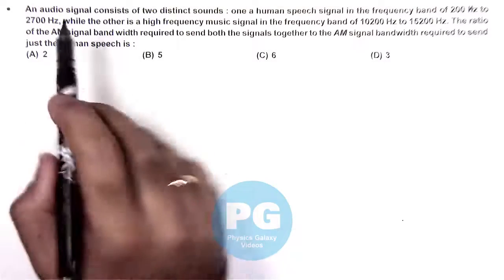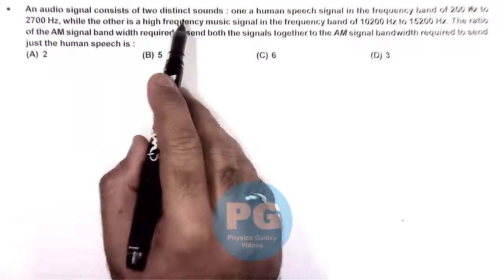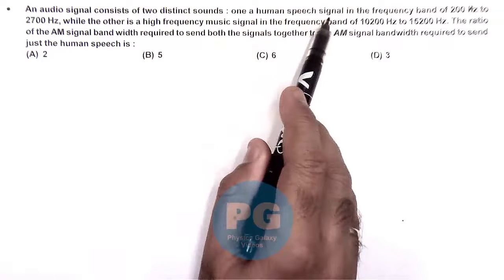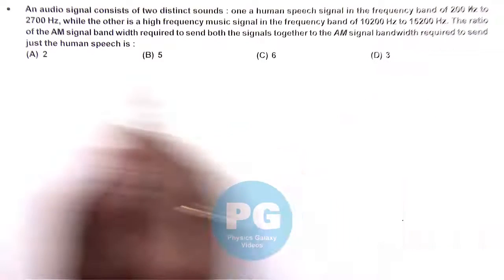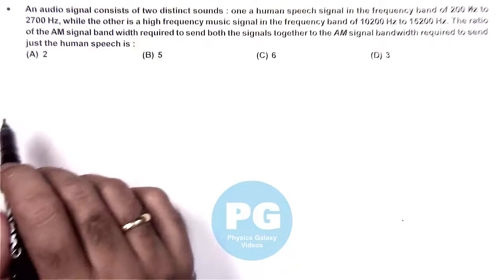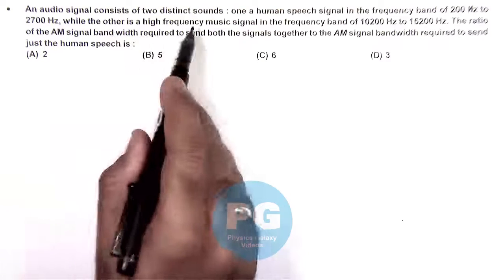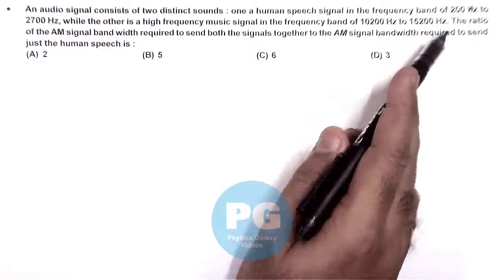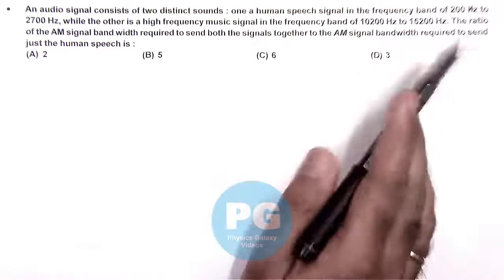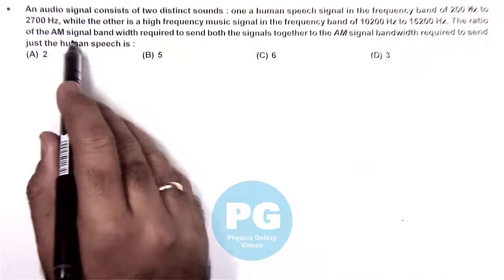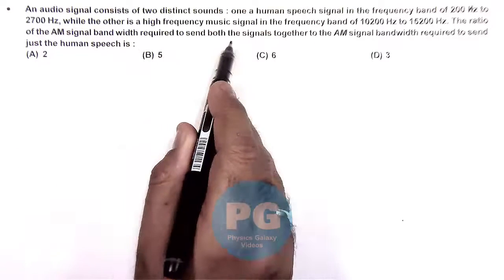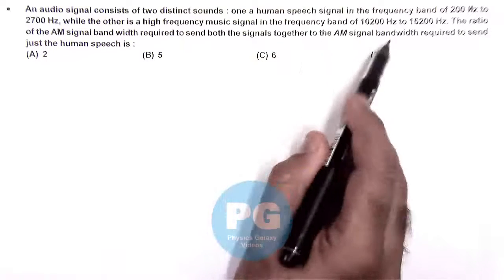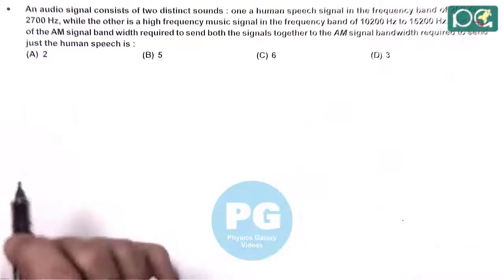In this question, an audio signal consists of two distinct sounds. One signal is a human speech signal in the frequency band of 200 Hz to 2700 Hz, while the other is a high frequency music signal in the band of 10200 Hz to 15200 Hz. The question asks for the ratio of the AM signal bandwidth required to send both signals together, to the AM signal bandwidth required to send just the human speech.